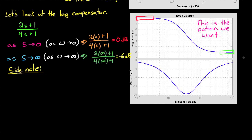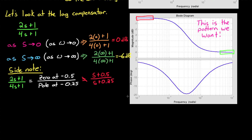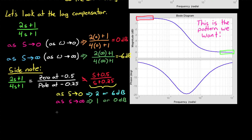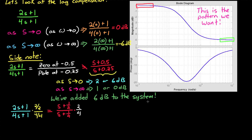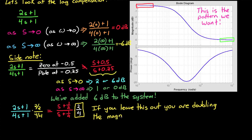A quick side note: this lag compensator has a zero at minus 0.5 and a pole at minus 0.25, but that doesn't mean you can write the lag compensator as s plus 0.5 divided by s plus 0.25. Sure, both have a single pole and a single zero in the exact same place, but their gain is different. With the second method, as s approaches 0, the gain approaches 2, or 6 dB. So essentially we've just increased the gain plot up by a factor of 2, or 6 dB. Multiply the numerator by 2 over 2 and the denominator by 4 over 4 and we're left with a gain of 2 divided by 4. I'll stick with the first way I wrote it because it's cleaner, but you can write it either way as long as you keep track of the gain.